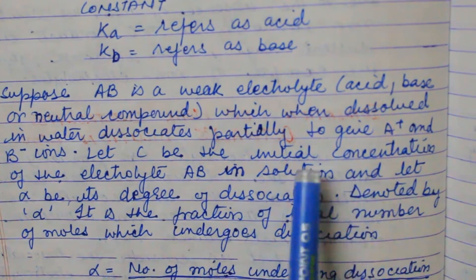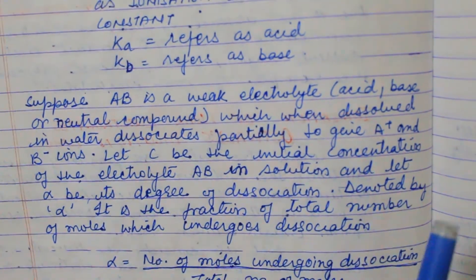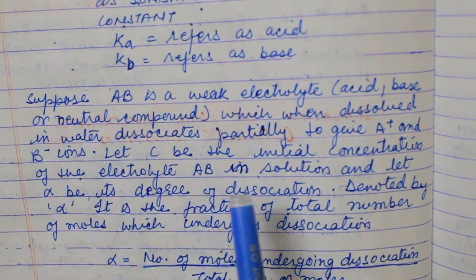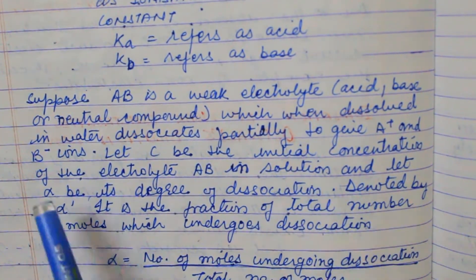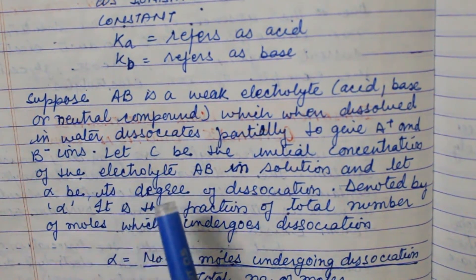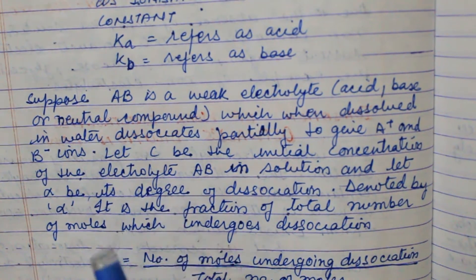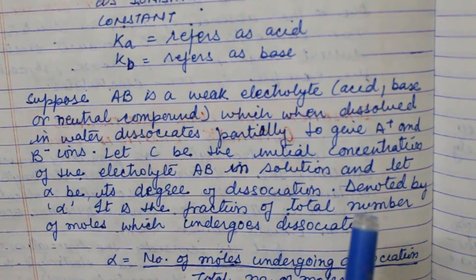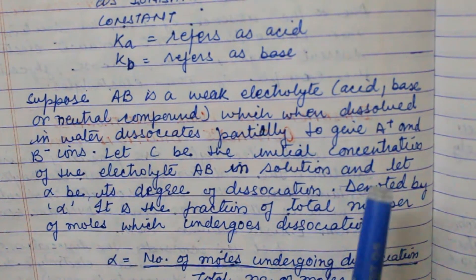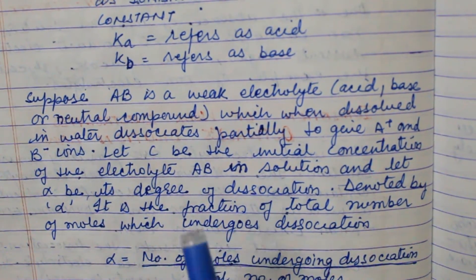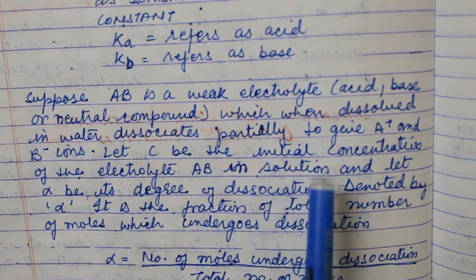Suppose AB is a weak electrolyte — an acid, base, or neutral compound — which when dissolved in water dissociates partially to give A⁺ and B⁻. For example, when NaCl, KCl, or copper sulfate dissolve in water, the cations such as Na⁺, K⁺, or Cu²⁺ are the positive ions and OH⁻ or sulfate is the negative ion. They dissociate in this ion form.